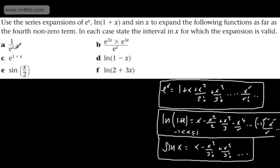Let's look at some of these. The first one is 1 over e to the x. Now, 1 over e to the x is e to the minus x. So what we're looking for is the expansion of e to the minus x. All we're going to do is take e to the x and every time we see an x, sub in minus x.